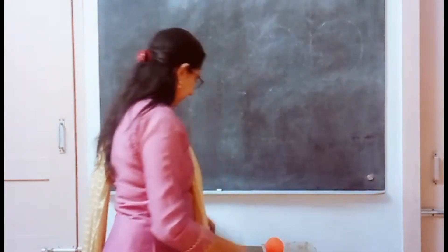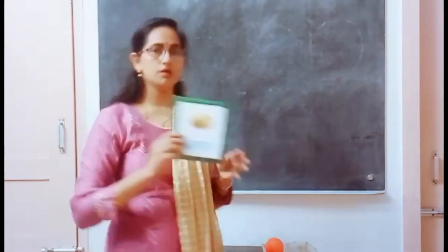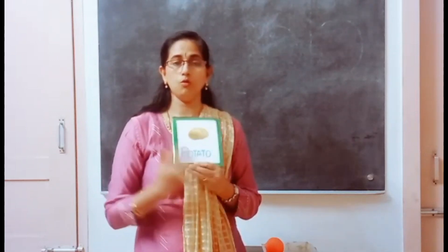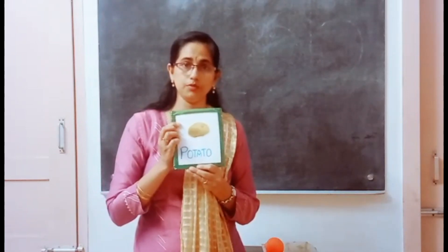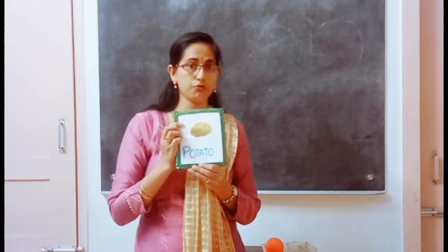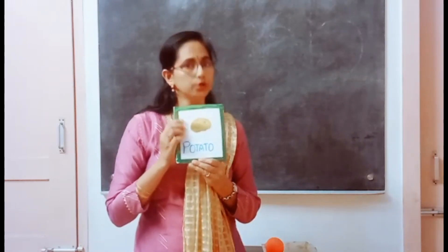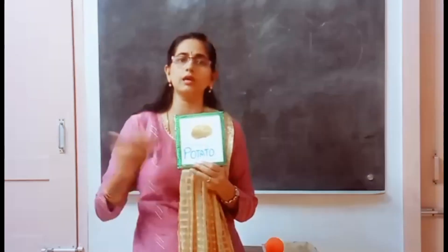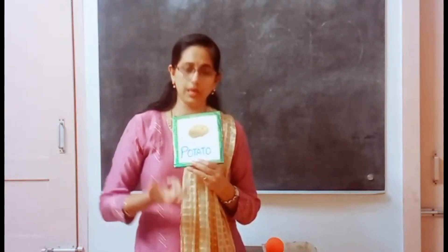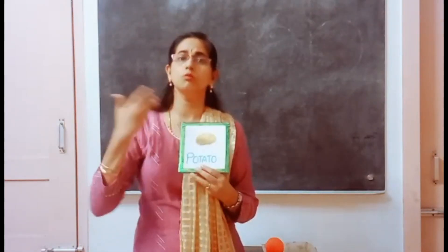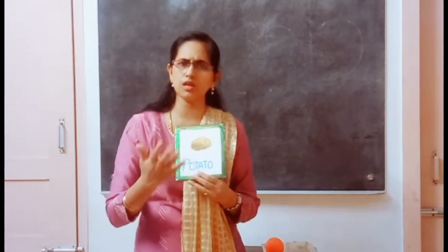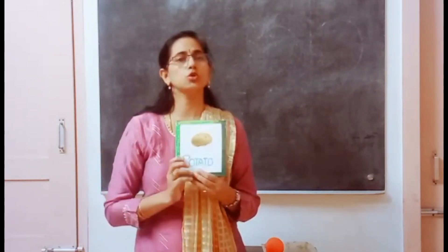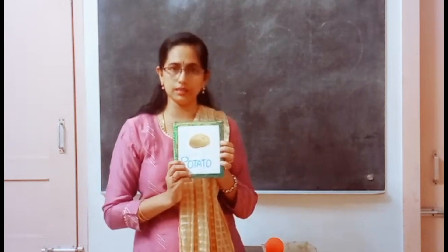Here's another example. What is this? — This is a potato. Is potato a fruit or a vegetable? — Potato is a vegetable. What is the shape of it? What color is it? You can ask many such questions and the child will be able to answer in a proper way.